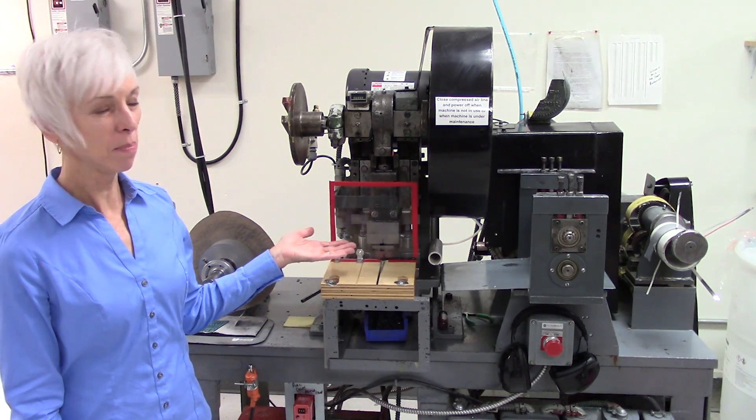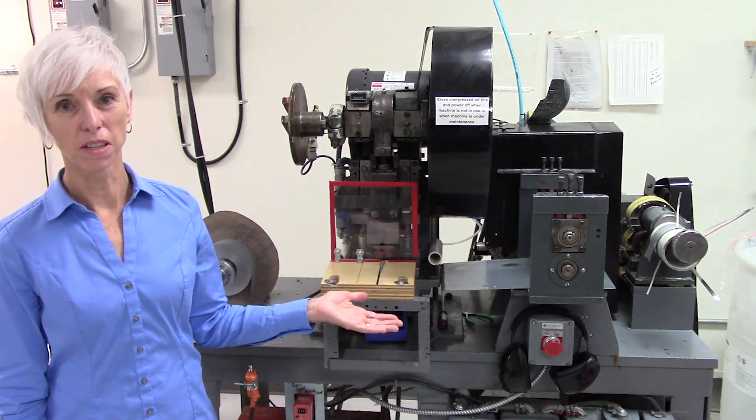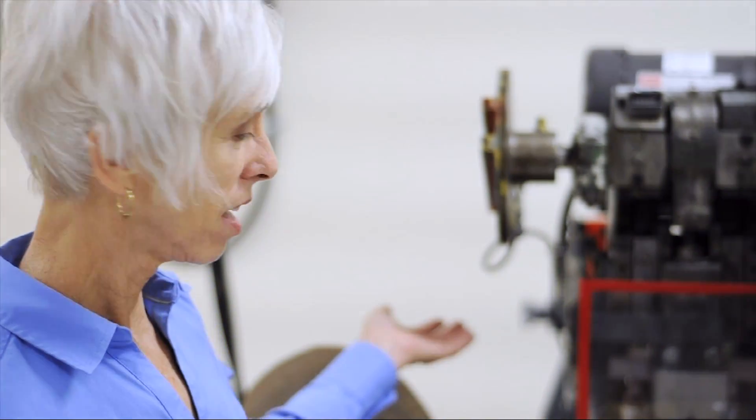This is the stamping machine where we stamp out sections of anode and cathode. During that process, a tab is attached to each of the sections, and that tab ultimately is welded to the lugs that the user will then put into their piece of equipment.